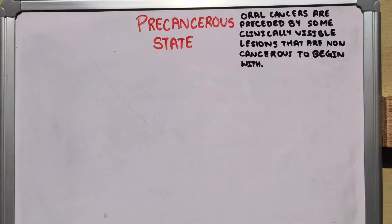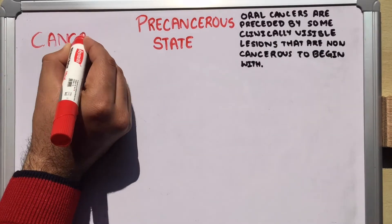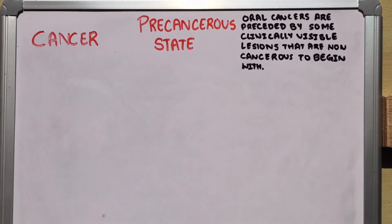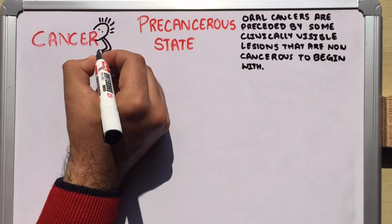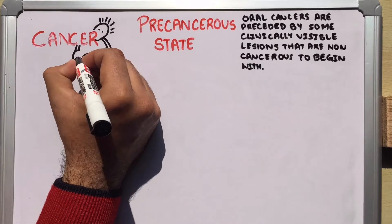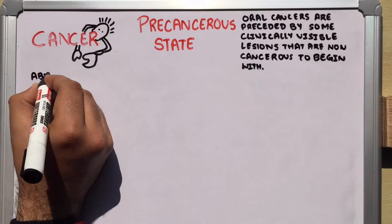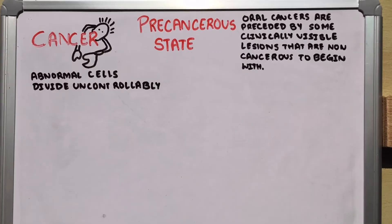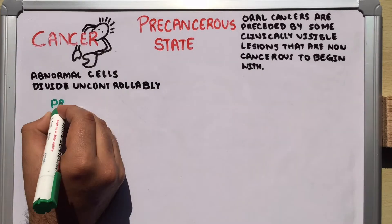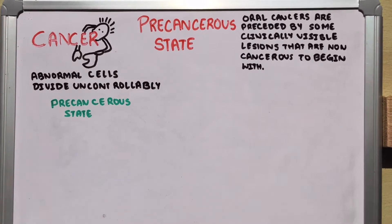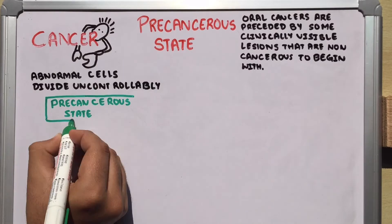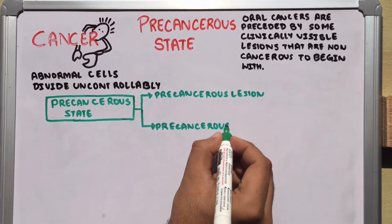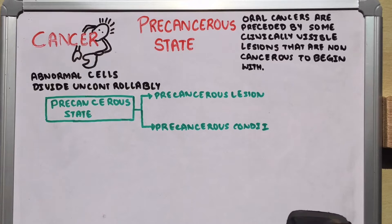The term cancer refers to uncontrolled proliferation of abnormal cells in the body. It originated from the Greek word 'karkinoma,' which means crab. The oral precancerous state is divided into two broad groups: precancerous lesions and precancerous conditions.